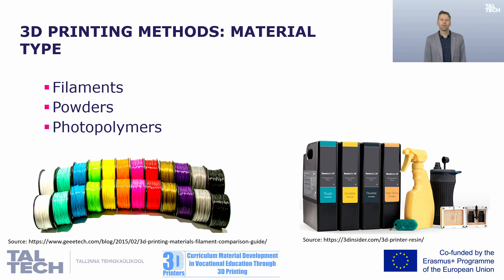When we are talking about 3D printing of plastics, basically we have several material types that we can use for that. There are many producers and many different materials. These main categories are filaments, powders, and photopolymers.